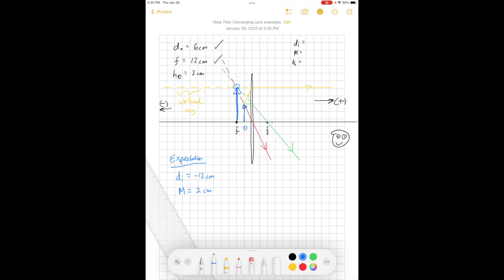And then lastly, the object, or sorry, the image height, if it's two times as big, then we might guess that the image height would be approximately 4 centimeters. So now we'll actually plug things into the lens equation and see how it works out.